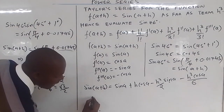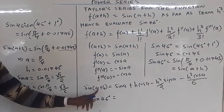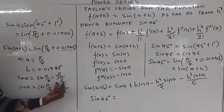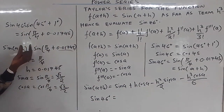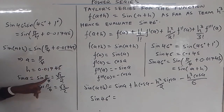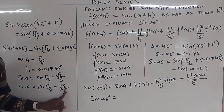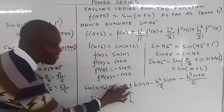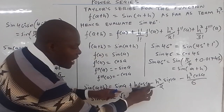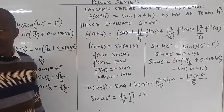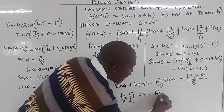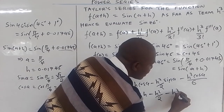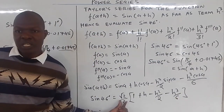Now substituting into sin(a+h): where there is sin(a) we put √2/2, where there is h we put 0.01745, and where there is cos(a) we put √2/2. Since sin(a) and cos(a) are both √2/2, we can factor √2/2 outside the bracket, leaving: √2/2 × (1 + h − h²/2 − h³/6).